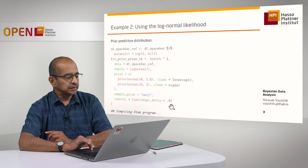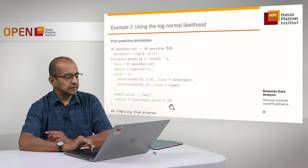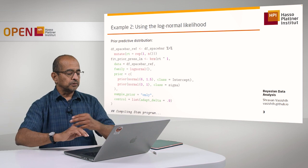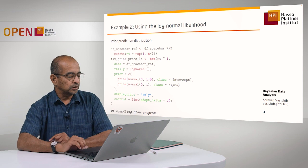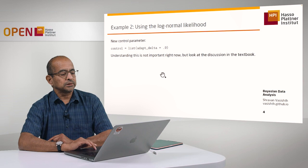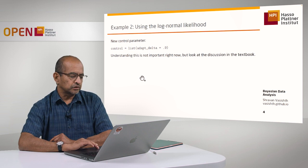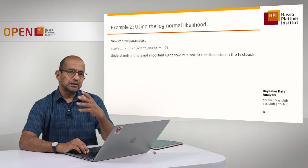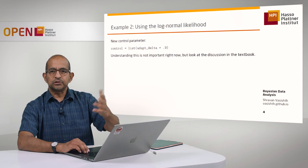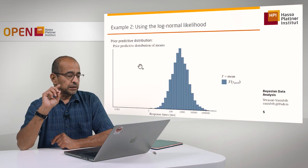You'll notice there's another command here that I put in: this control command with adapt_delta = 0.9. I had to put this in because the prior predictive data sometimes has some convergence problems, and you can change the parameter settings inside the MCMC sampling algorithm that is used by Stan so that those convergence problems don't happen. I won't discuss this much, but you can look this up in the textbook and in the Stan manual. It's not important right now for us to worry about this control parameter. All we need to know is that we need this control parameter to generate those prior predictive distributions such that we get convergence when we produce the data.